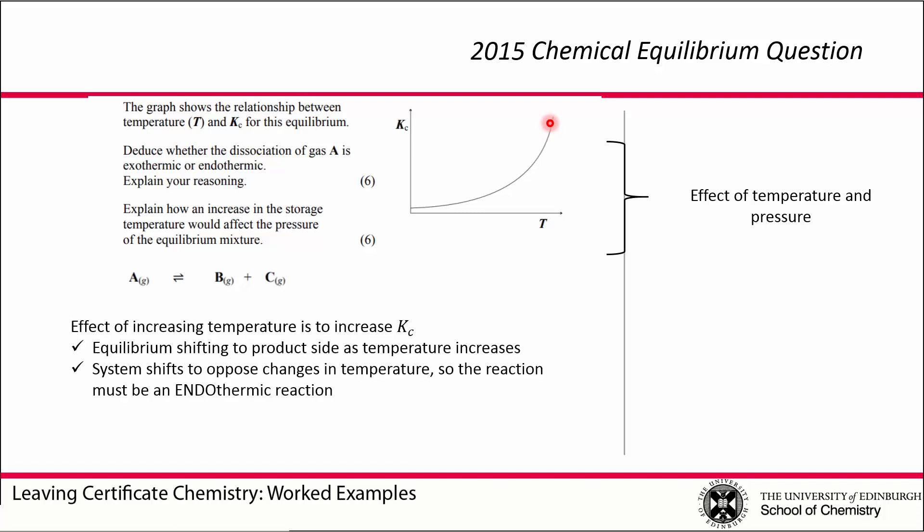Le Chatelier says that equilibria will shift to oppose the change that we impose on it. Our equilibrium is shifting to form products to offset the increase in temperature that we are applying. That must mean that the forward reaction is endothermic. It is mopping up some of this heat that we have been applying through increasing the temperature. If we have an equilibrium and the forward reaction is promoted by increasing temperature, that must mean it is an endothermic reaction.